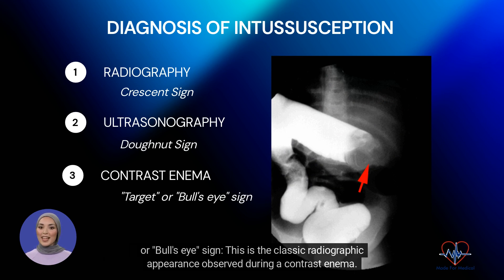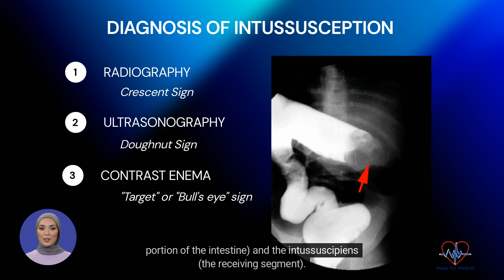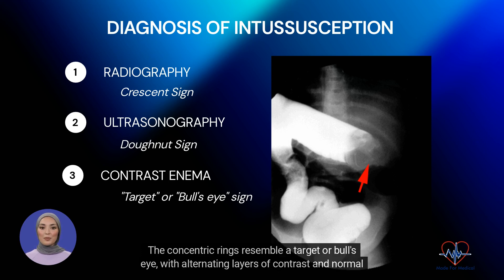The target or bull's eye sign is the classic radiographic appearance observed during a contrast enema. It appears as a concentric pattern where the contrast material outlines the intussusceptum — the invaginated portion of the intestine — and the intussuscipiens, the receiving segment. The concentric rings resemble a target or bull's eye with alternating layers of contrast and normal bowel.